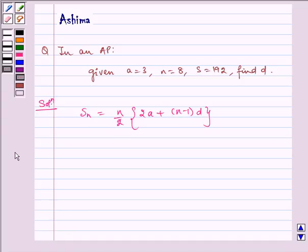Now substituting the values of a, n and s we get, s is given to us as 192, which is equal to 8 by 2, 2 multiplied by 3 plus 8 minus 1 d.